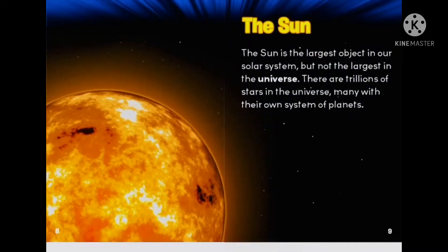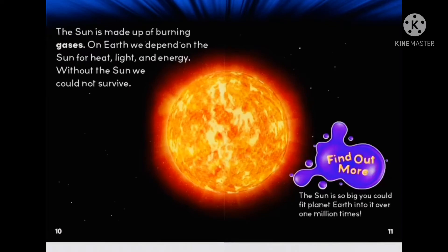The sun is the largest object in our solar system, but not the largest in the universe. There are trillions of stars in the universe, many with their own system of planets. The sun is made up of burning gases. On Earth, we depend on the sun for heat, light, and energy. Without the sun, we could not survive. The sun is so big, you could fit planet Earth into it over one million times.